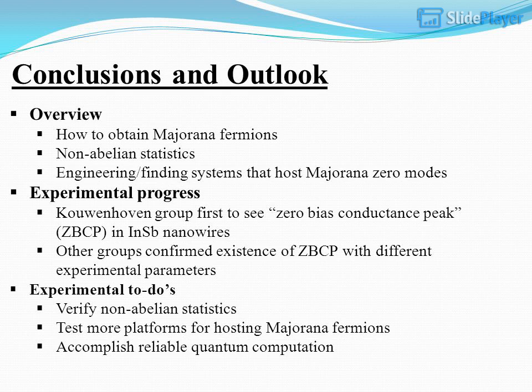Conclusions and Outlook. Overview: how to obtain Majorana fermions, non-Abelian statistics, and engineering or finding systems that host Majorana zero modes. Experimental progress: the Kouwenhoven group was first to observe a zero-bias conductance peak (ZBCP) in an InSb nanowire; other groups confirmed the existence of ZBCP with different experimental parameters. Experimental to-dos: verify non-Abelian statistics, test more platforms for hosting Majorana fermions, and accomplish reliable quantum computation.